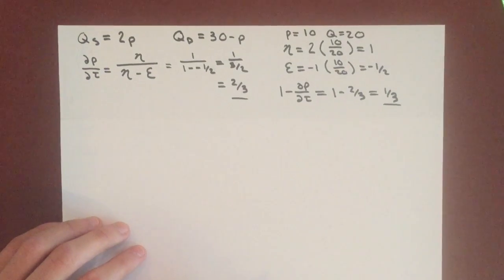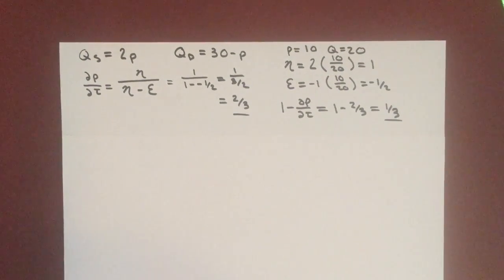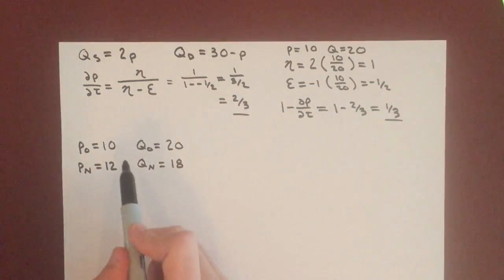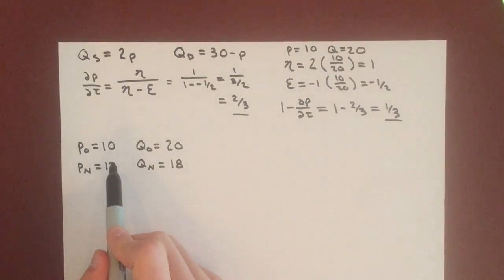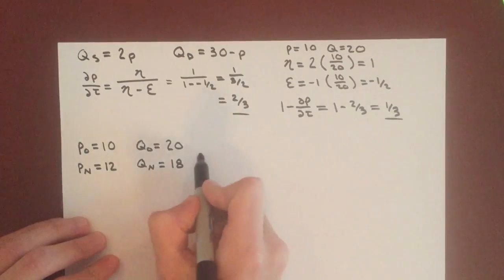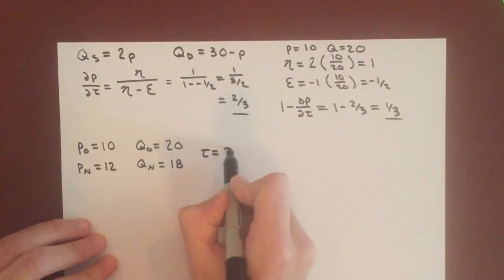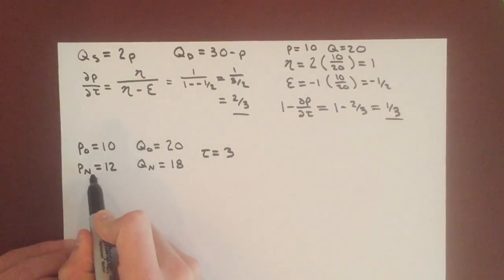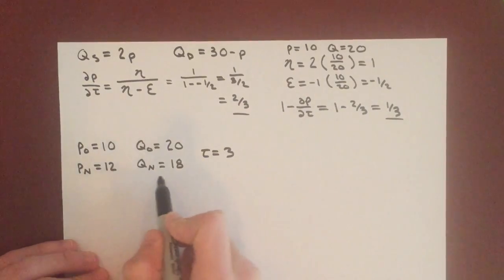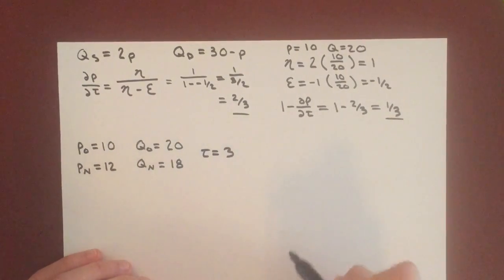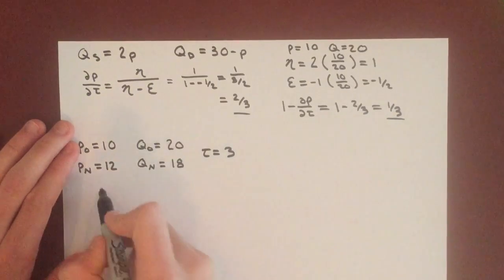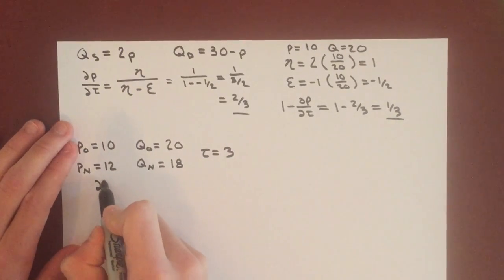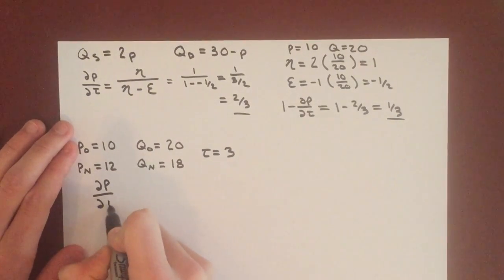Now we'll look at it through an algebraic sense. We actually did this example in our last video, and we found that if we institute a tax of 3 dollars, the new equilibrium is price equals 12 and quantity equals 18.